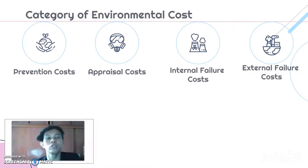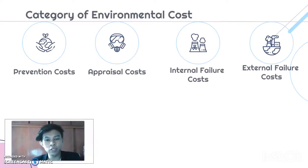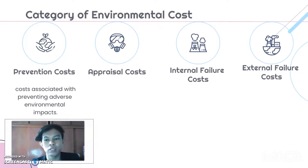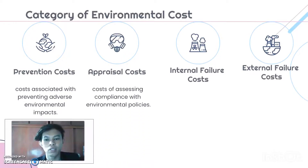Next, we move on to the categories of environmental cost. I will explain briefly the four types of environmental cost categories. The first is prevention cost, which is associated with preventing adverse environmental impacts.